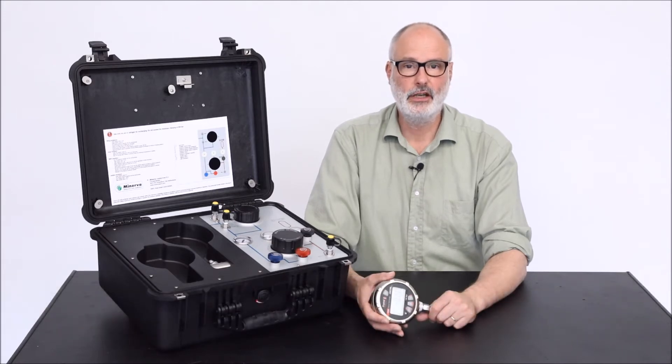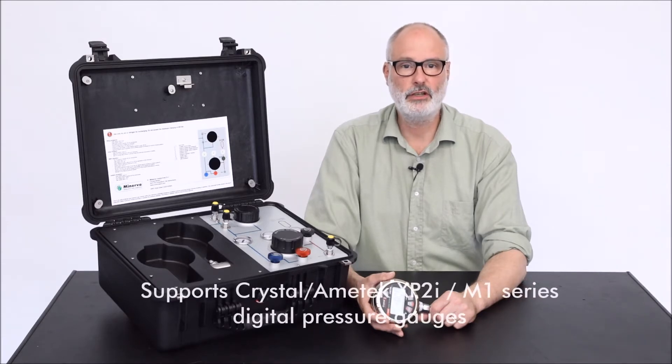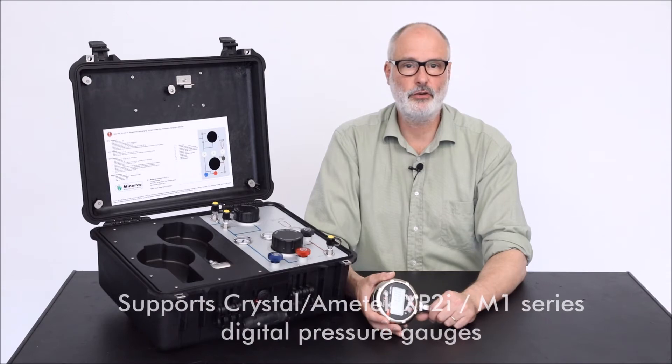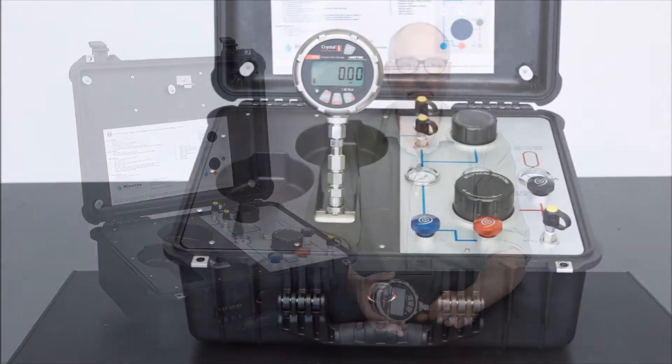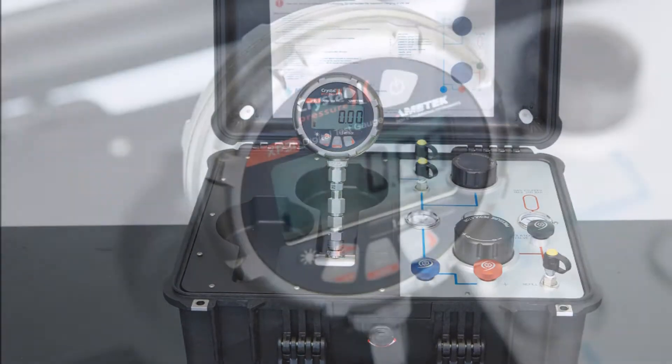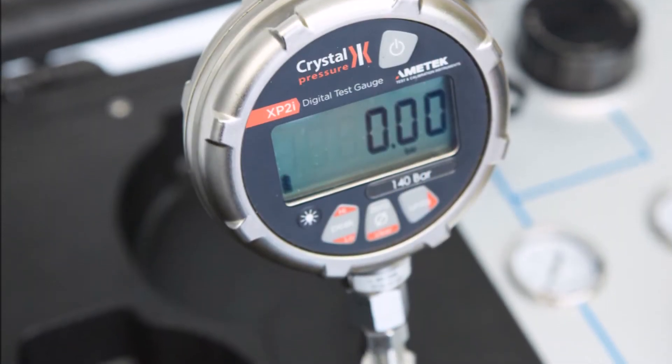The MNF300CA XP2 is especially designed for the Crystal Ametek XP2i and the M1 series digital pressure gauges. These cases offer improved efficiency to quickly and safely perform clean high pressure calibrations at your location.